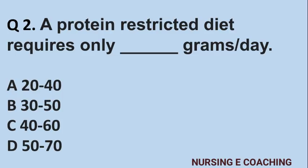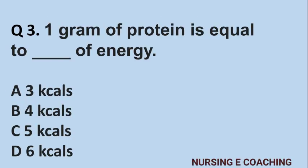Question number 2: A protein-restricted diet requires only how many grams per day? A) 20 to 40, B) 30 to 50, C) 40 to 60, D) 50 to 70. Answer is C) 40 to 60.